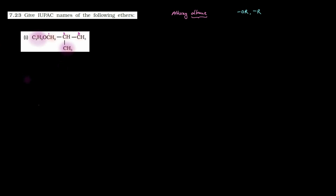Isko hum kya bolenge? Isko hum ethoxy bolenge. Ab toh naam likhna aasan ho gaya. First position par ethoxy, second par methyl — alphabetical order check karenge toh pehle aayega ethoxy. Toh iska naam ho jaayega 1-ethoxy aur second position par hai methyl group toh 2-methyl — teen carbon atoms ki chain hai, toh yeh ho jaayega: 1-ethoxy-2-methylpropane.